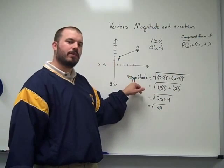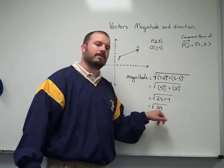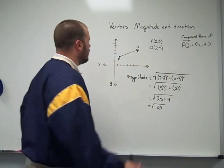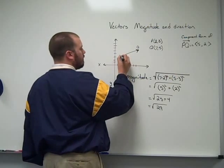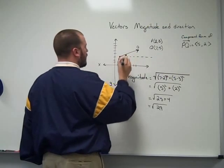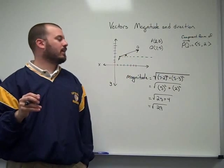So my magnitude of this vector is the square root of 29. And then the direction of the vector is the angle in relation to the horizontal. So I need that direction right there, that angle.